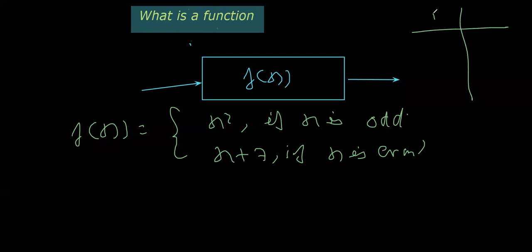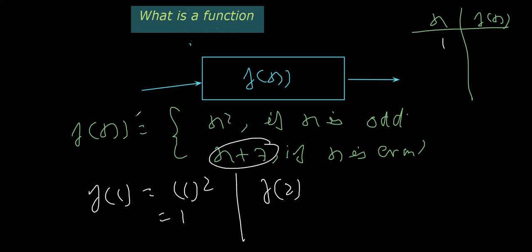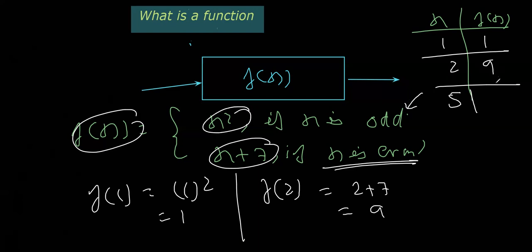If we place x as 1 — which is odd — we use the definition f(x) = x², giving us 1² = 1. If x is 2 — which is even — we use x + 7, giving 2 + 7 = 9. If x is 5, which is odd, we use x² and get 5² = 25.